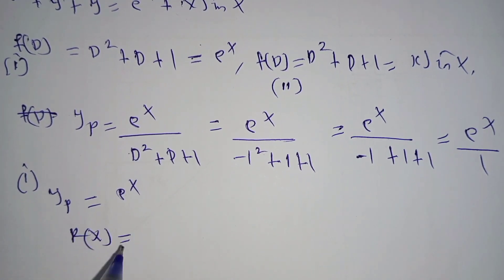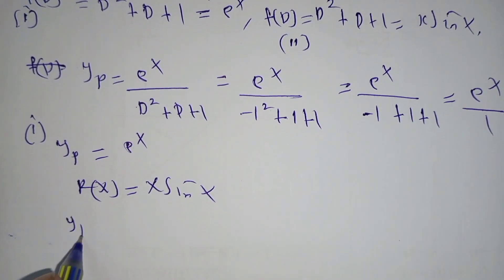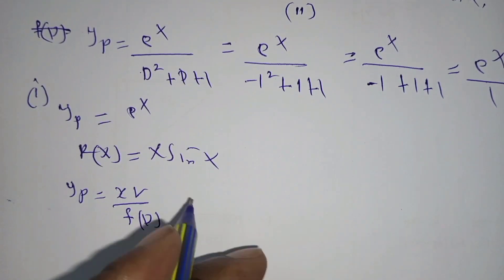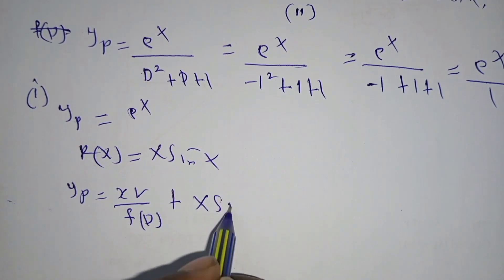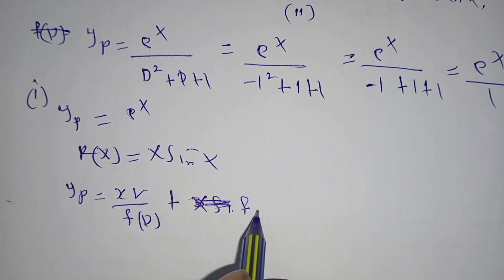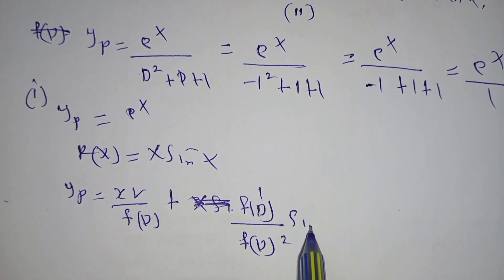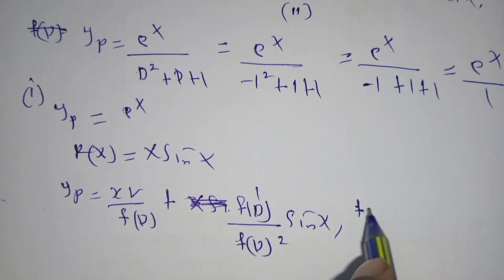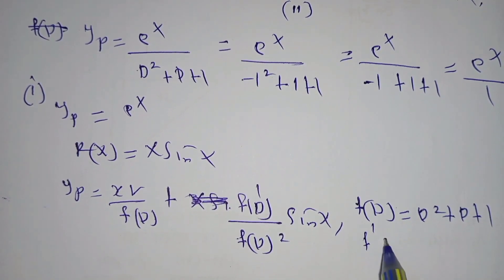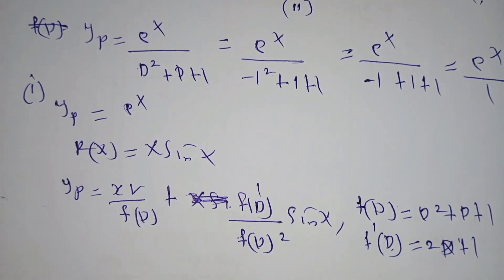For case two, r(x) = x·sin(x), so y_particular is given by: x over f(D) plus f'(D) divided by f(D)² — all multiplied by sin(x). Here f(D) = D² + D + 1, and f'(D), meaning we differentiate with respect to D twice, gives 2D + 1.